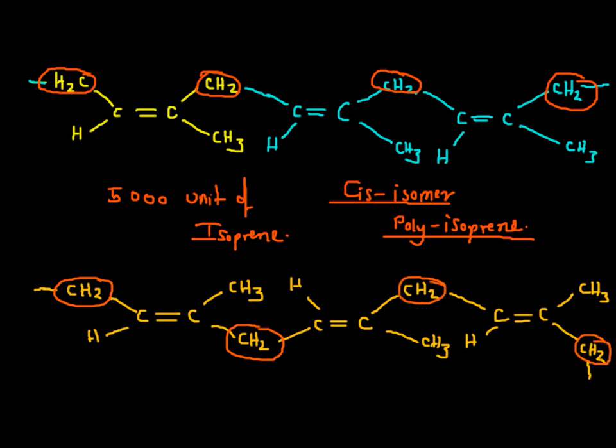So you can see they are at trans position, they are at trans position, and this isomer is called as trans polyisoprene, which is nothing but the synthetic rubber.